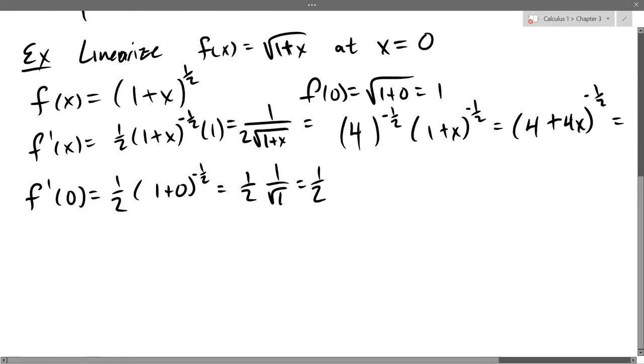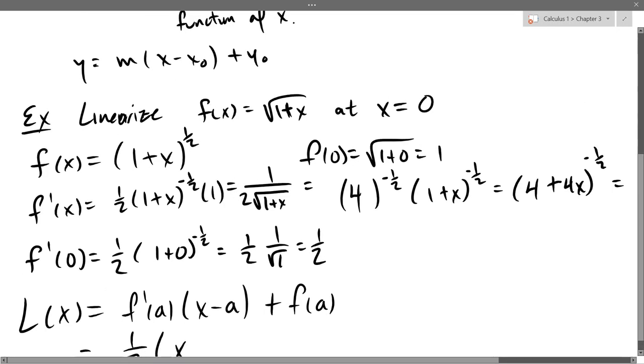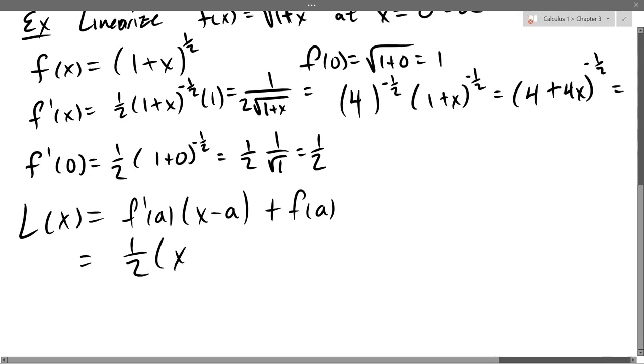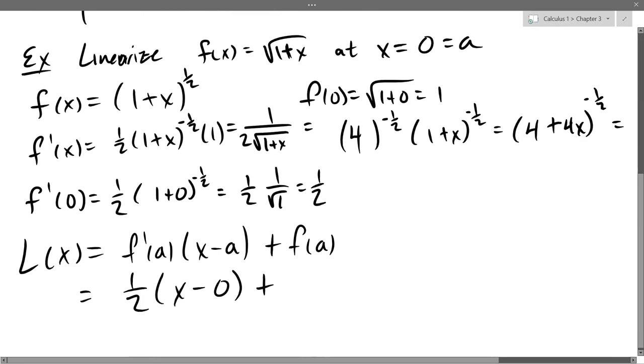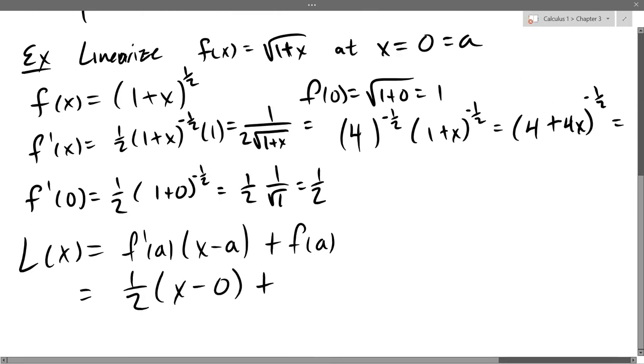All right. Linearize this. So L of X equals F prime A, X minus A, plus F of A. So F prime is 1 half. A, X is 0. So this is really our A value. A is 0. It's X minus 0, plus what is F of 0? I did that. At the top here, F of 0 is square root of 1, which is 1.